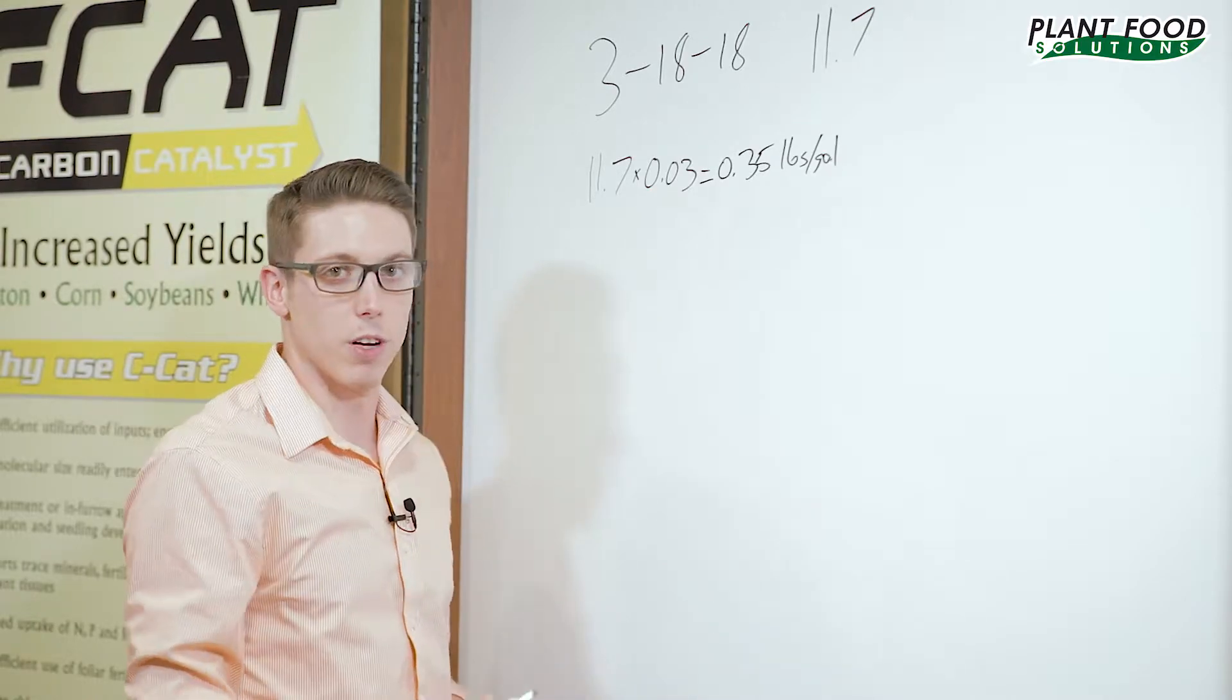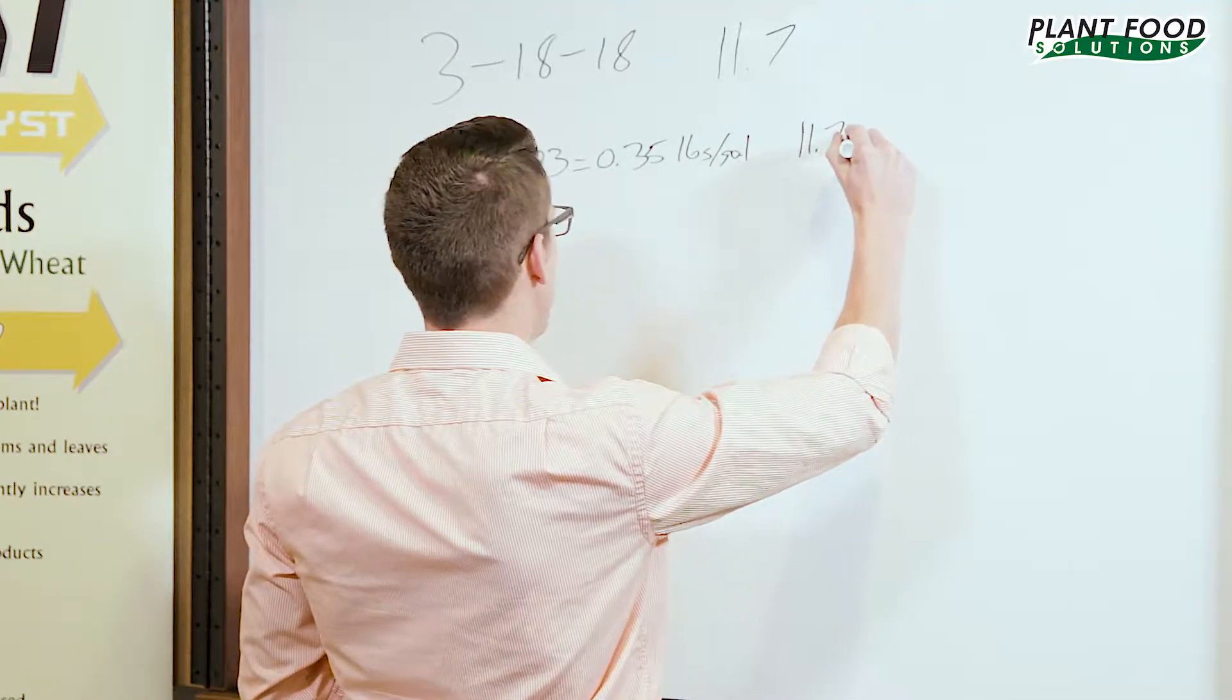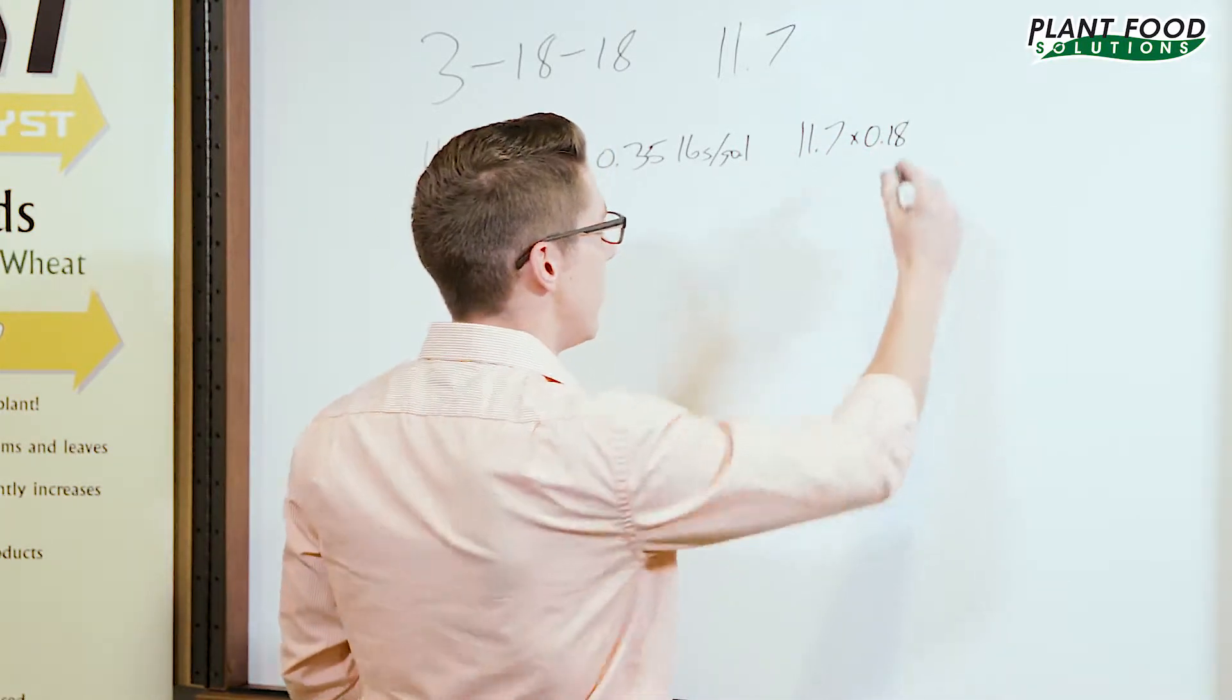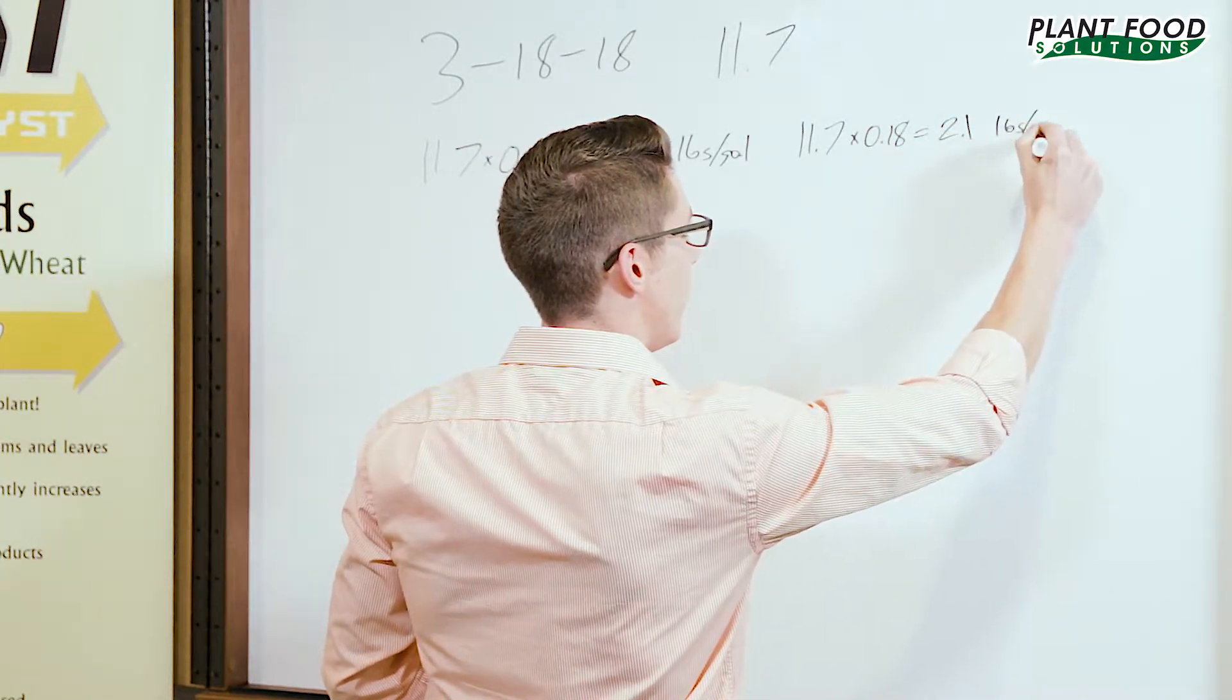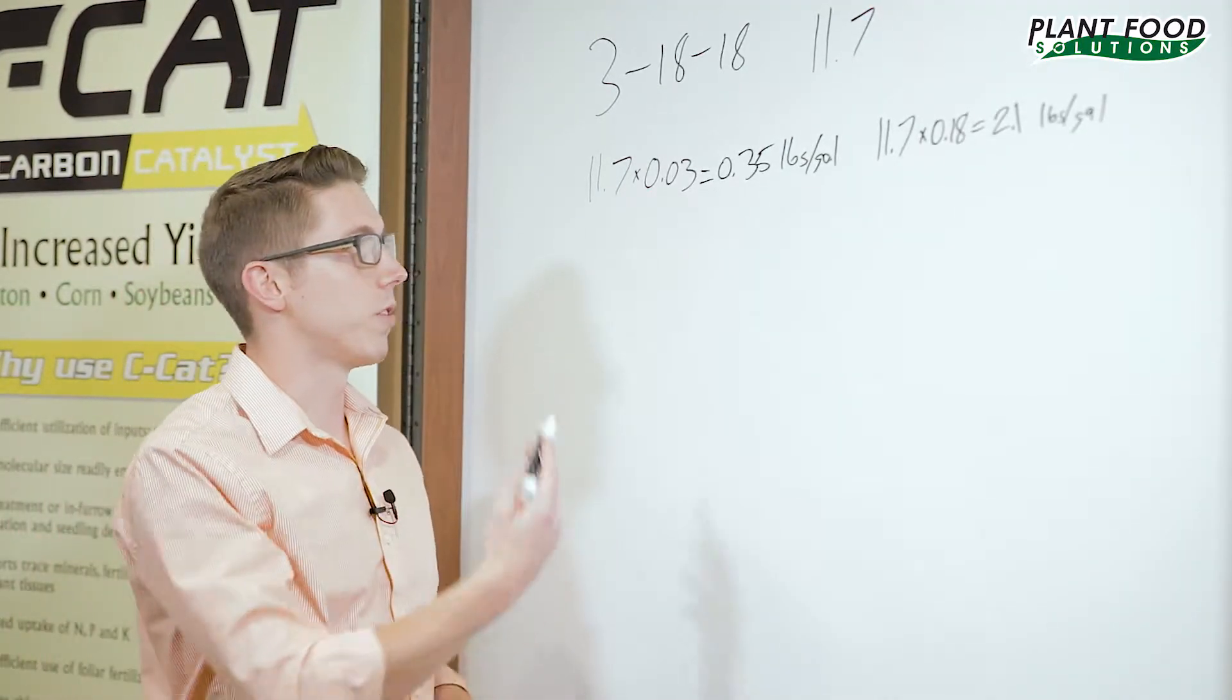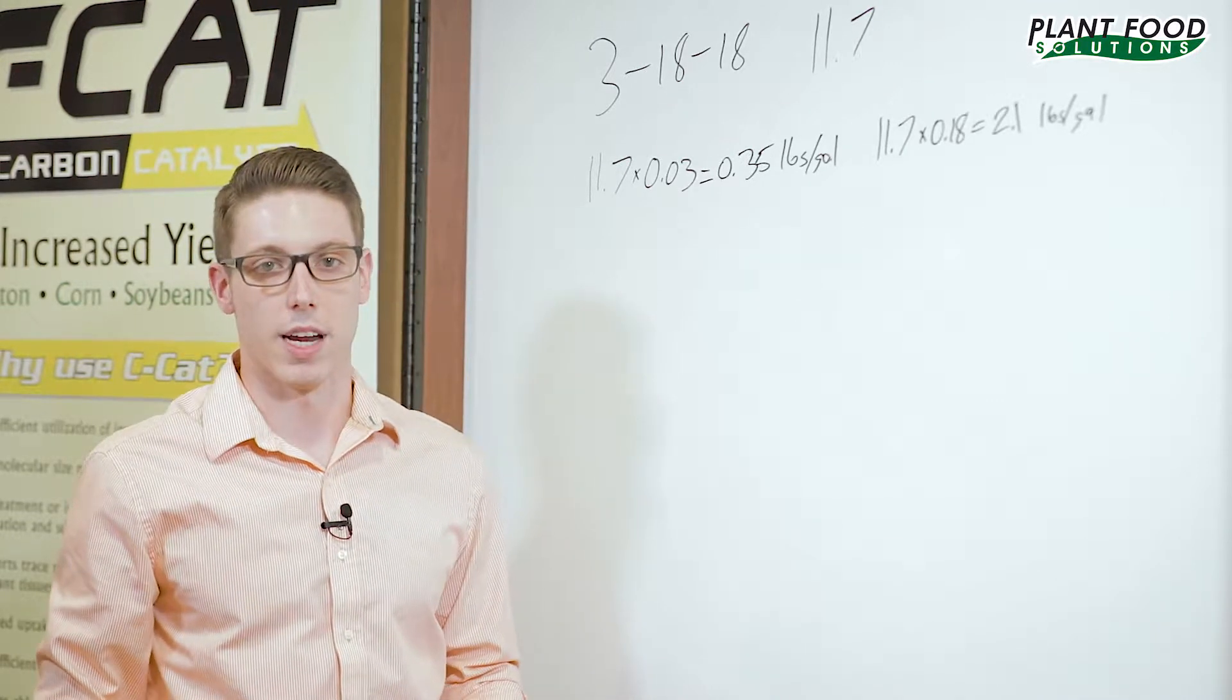We're going to do that for phosphorus as well. So that's going to be 11.7 times 0.18 since that's a percentage again and you're going to get 2.1 pounds to the gallon. Since your potassium is the same as your phosphorus in here, they're both 18%, you're going to have 2.1 pounds to the gallon as well.